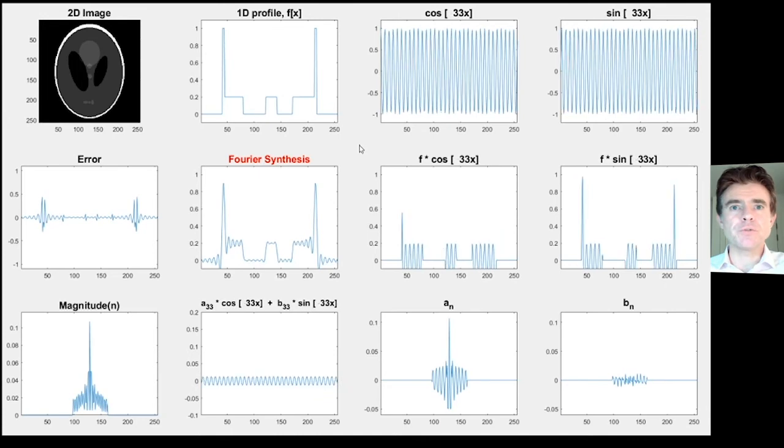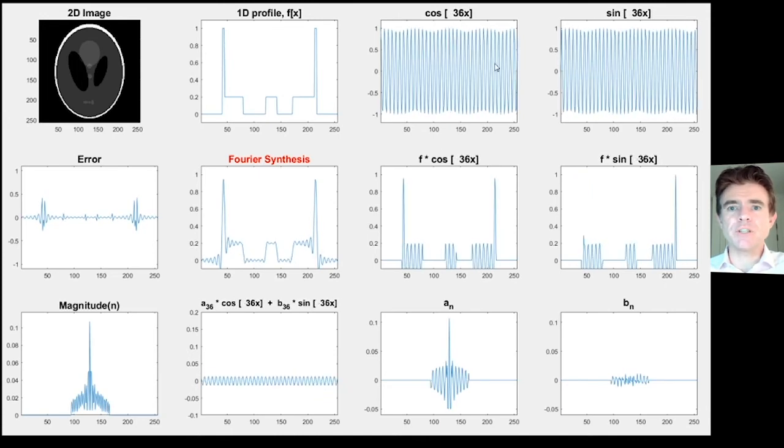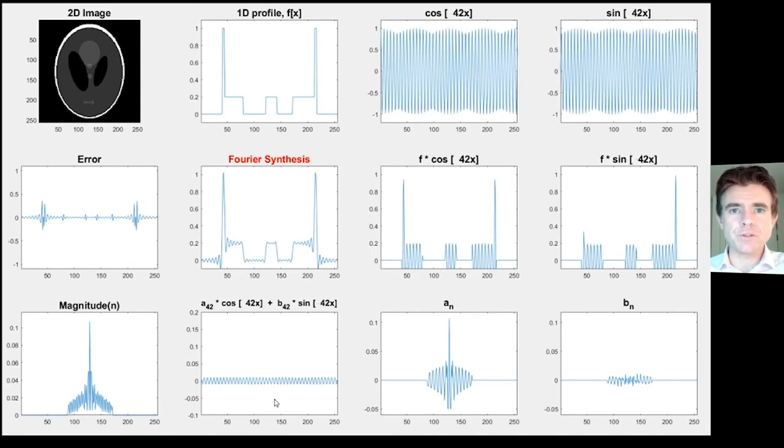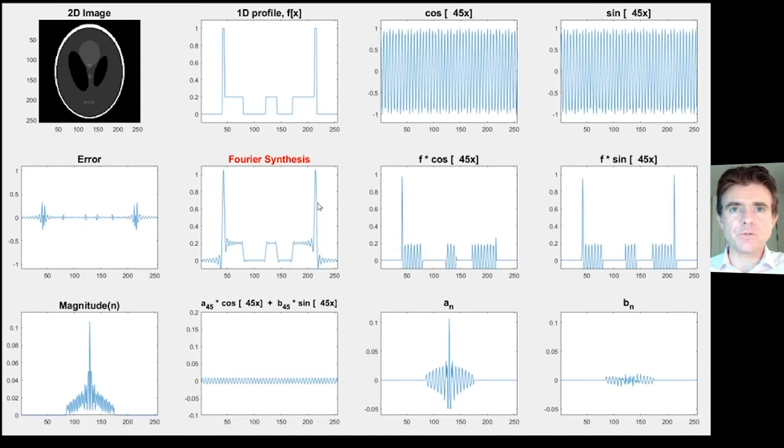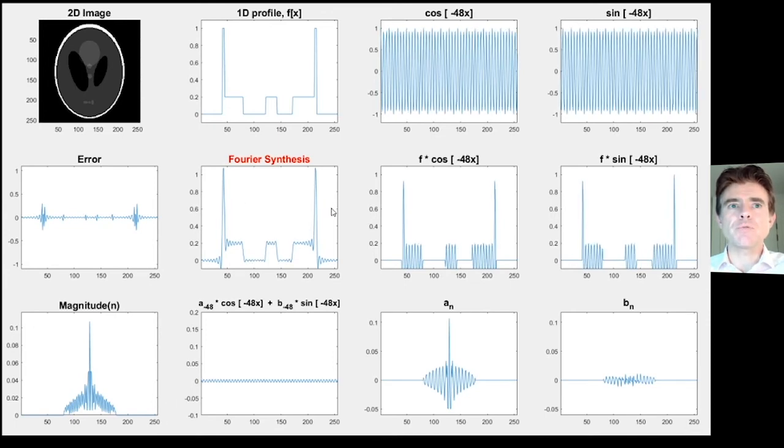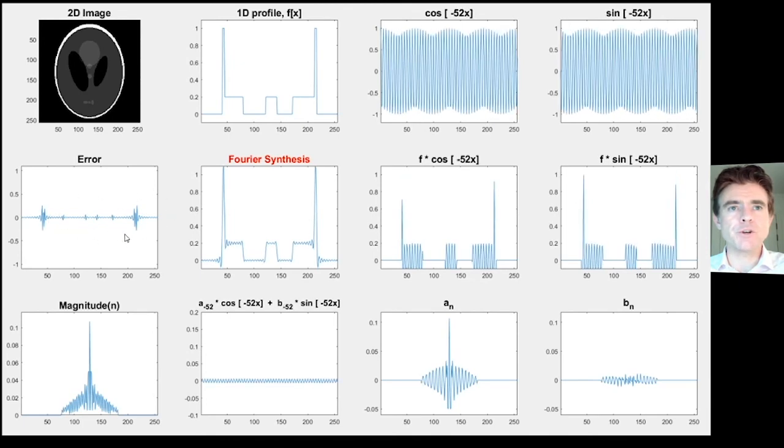Let's press on with more coefficients. We're getting higher and higher frequency components for the cosines and sines. The Fourier synthesis is taking on nice details that are getting closer to that profile. We're just adding on those high frequency components. Off to the side here, we're getting effectively a representation of the spectrum of the Fourier coefficients. It shows us that we're very dominated by low frequencies, with smaller and smaller contributions of the higher frequencies. The error is getting quite a bit smaller, which is very reassuring.